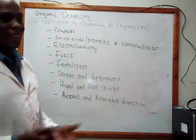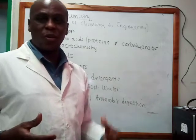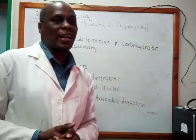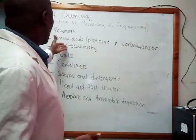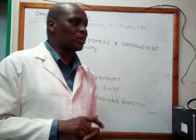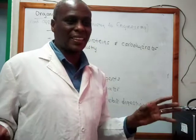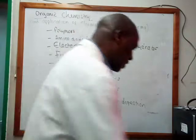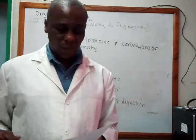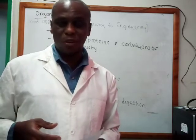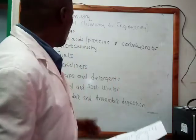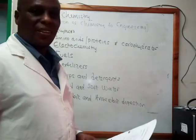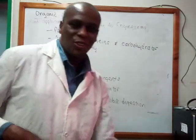To really understand this chemistry, you need to learn the building blocks of these compounds — something called functional groups. For example, to really know about amino acids, proteins, and the rest, you need to learn about ketones, aldehydes, alcohols, and so on. This course — Chemistry 2 or Organic Chemistry — will be split into a first section dealing with building blocks of organic molecules, and a second part on applied chemistry as it applies to engineering.